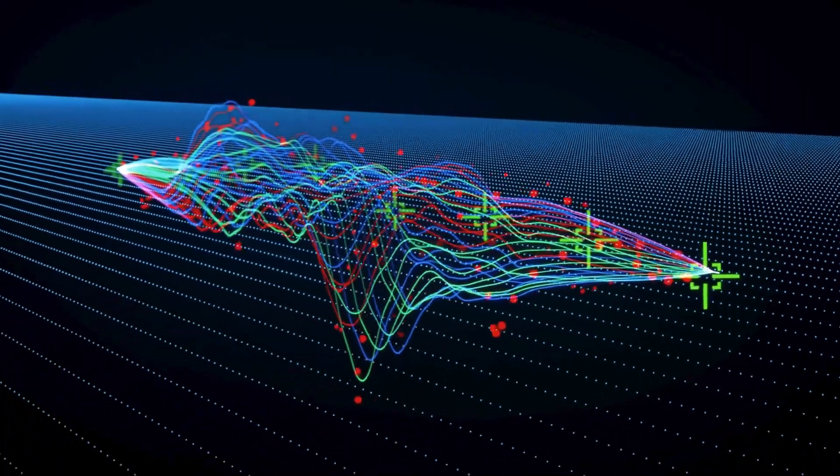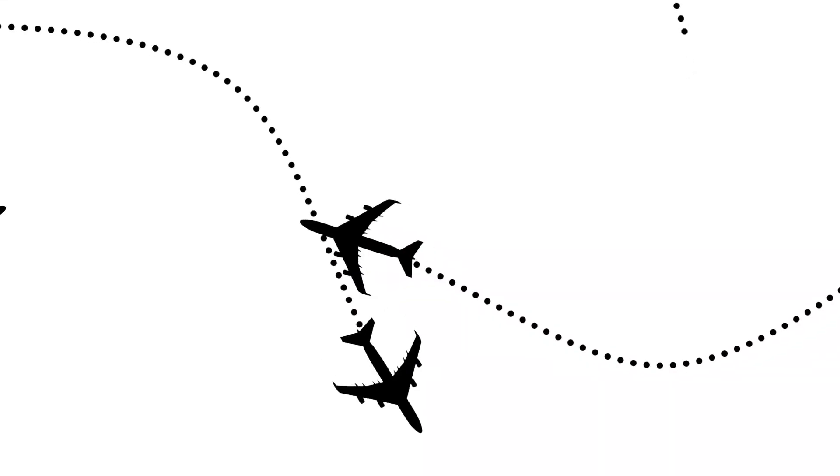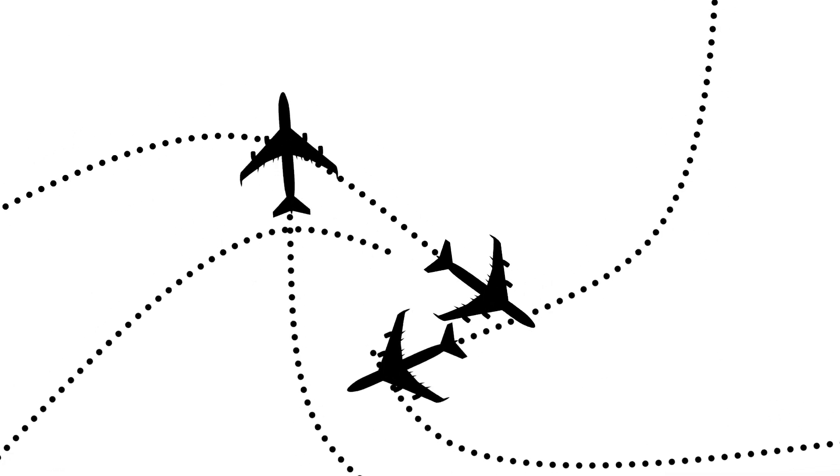Voyager's journey has revealed that interstellar space is far from the empty void we once imagined. The spacecraft has detected magnetic fields, interstellar plasma, and even ripples caused by distant supernovae.